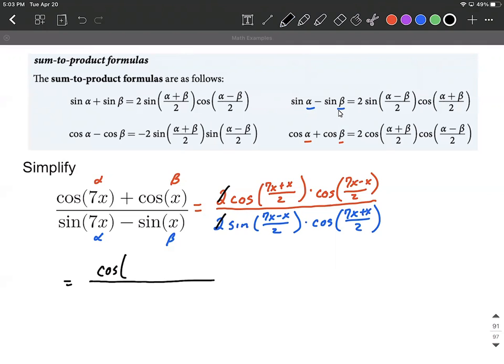This will give us cosine of 8x divided by 2, just combining like terms, and cosine of 6x divided by 2. For our denominator, we'll end up with sine of 6x divided by 2 multiplied by cosine of 8x divided by 2.